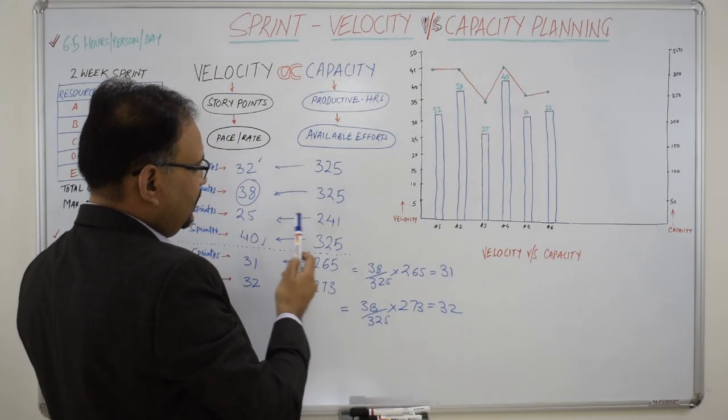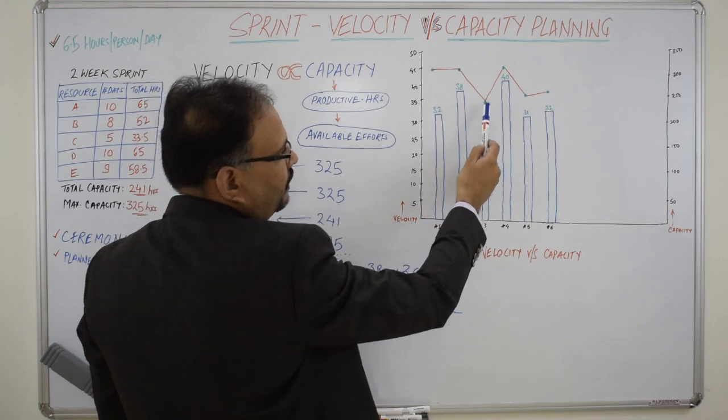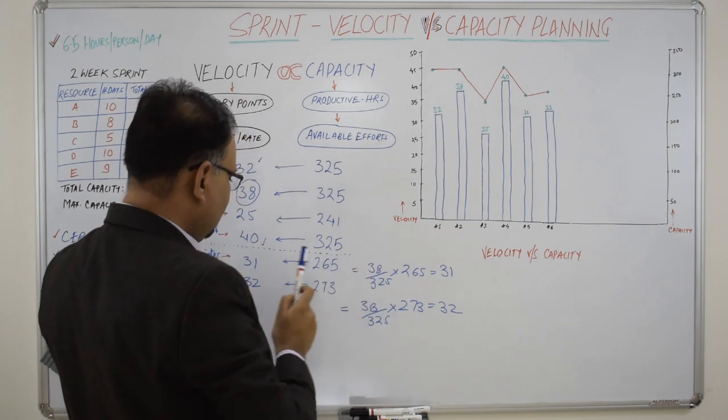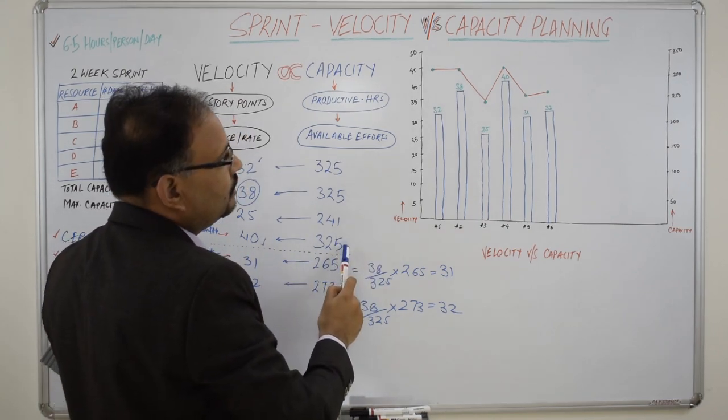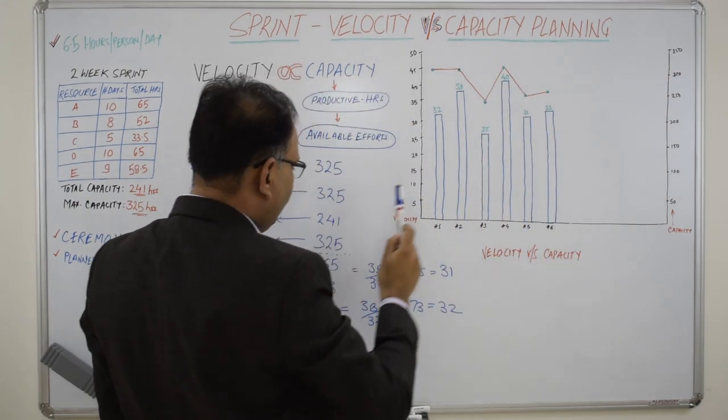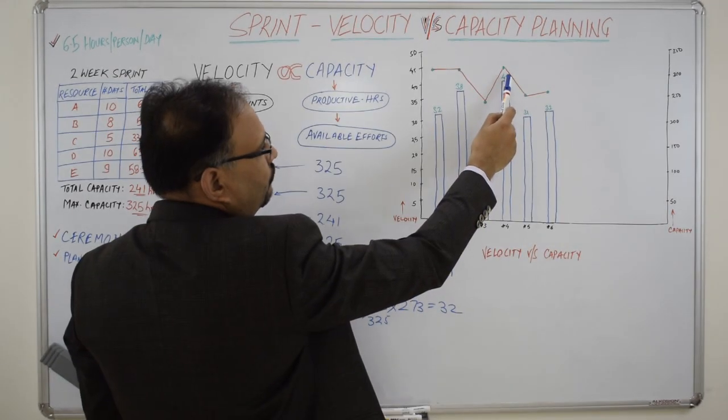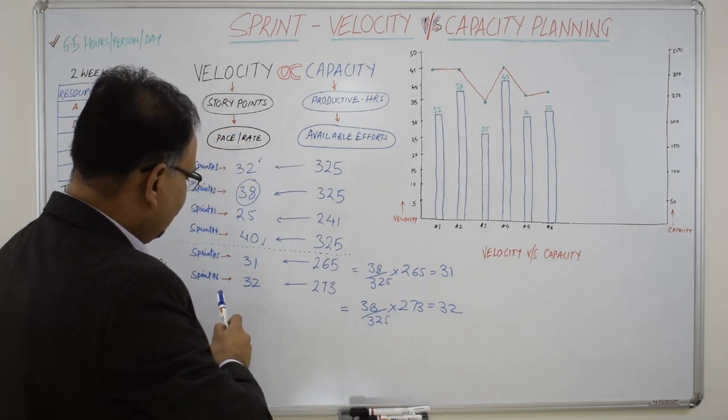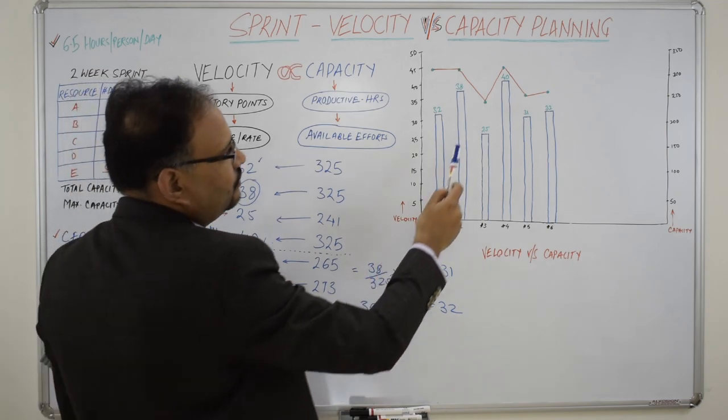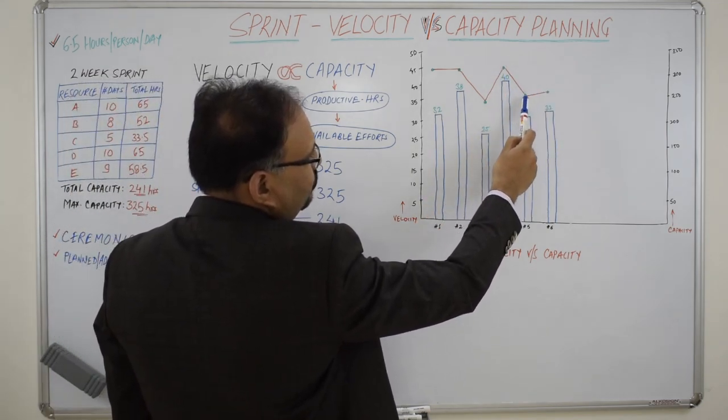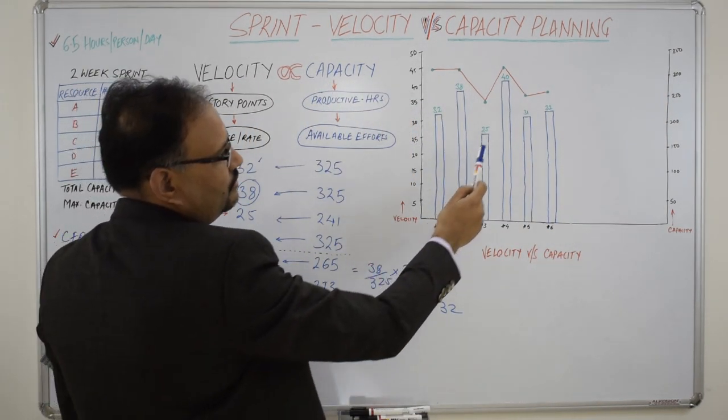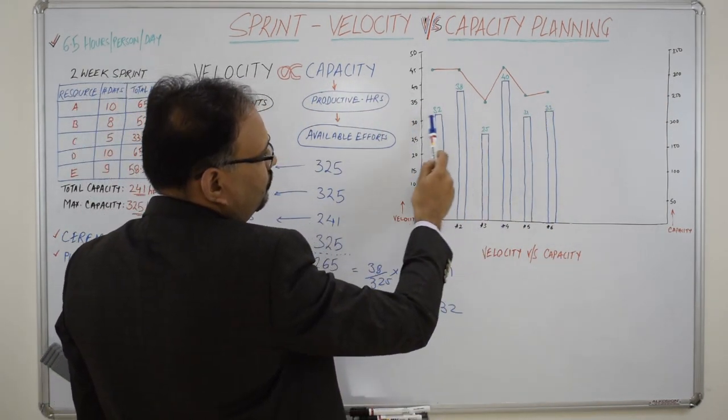In the third sprint the capacity is reduced down to 241 and velocity is also coming down to 25. For the fourth sprint the capacity has gone up to 325 and velocity also increased to 40. Similarly for sprint 5 and sprint 6 the capacity is 265 and 273. We can see a dip here and a slight rise to 265 and 273 and increase in the velocity from 31 to 32 which measures here.